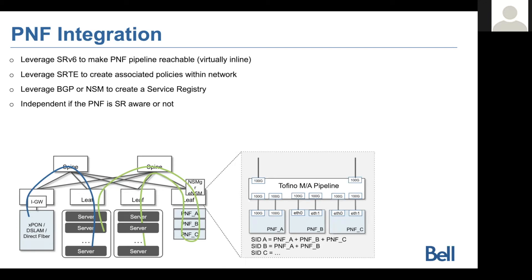I can associate that segment ID with the forwarding behavior within the ASIC that ties back all those functions — both PNFs and VNFs using SRv6, or CNFs also using the SRv6 models. Then I can create, based on the desired composition, a chain associated with multiple functions or a single function — and it has the simplicity of a YANG model being pushed to a device.